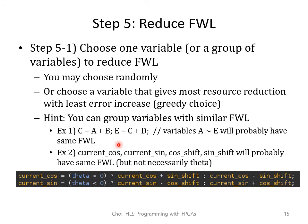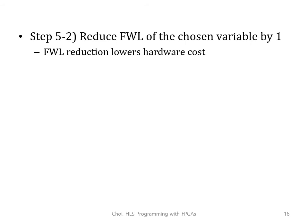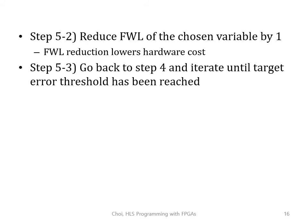For our CORDIC implementation, we are adding the variables current_sin, current_cosine, cosine_shift, and sine_shift. You can probably group those variables and assign the same FWL without much loss in accuracy. The data variable may need to be searched separately. The next step is to reduce the FWL of the chosen variable by one. If you have chosen a variable group, reduce the FWL of all variables in the group by one — this will reduce the hardware cost. Then go back to step 4 and measure the output error. You can keep repeating this process until the target error threshold has been reached.